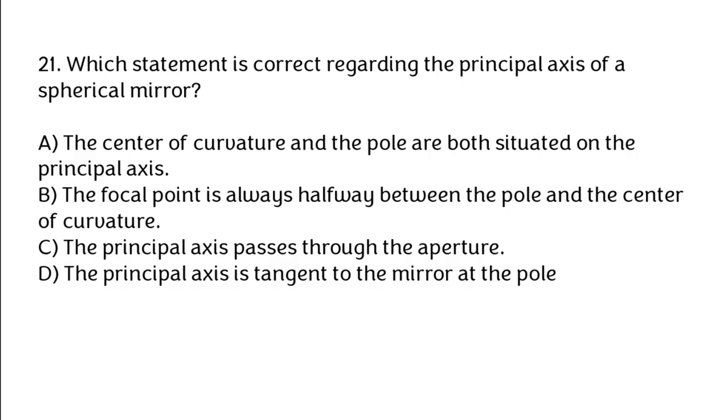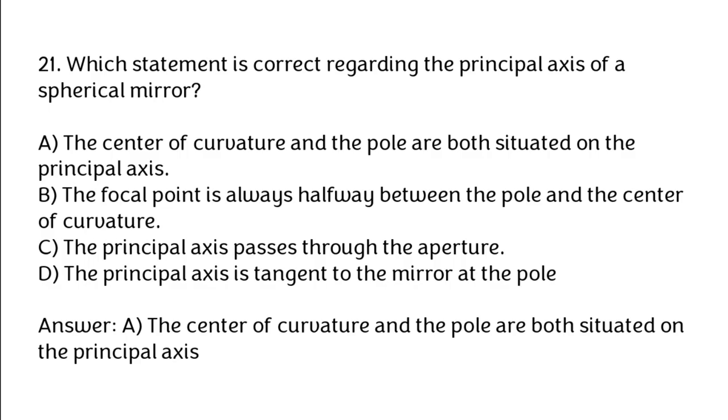Which statement is correct regarding the principal axis of a spherical mirror? A. The center of curvature and the pole are both situated on the principal axis, B. The focal point is always halfway between the pole and the center of curvature, C. The principal axis passes through the aperture, D. The principal axis is tangent to the mirror at the pole. Correct answer is A. The center of curvature and the pole are both situated on the principal axis.